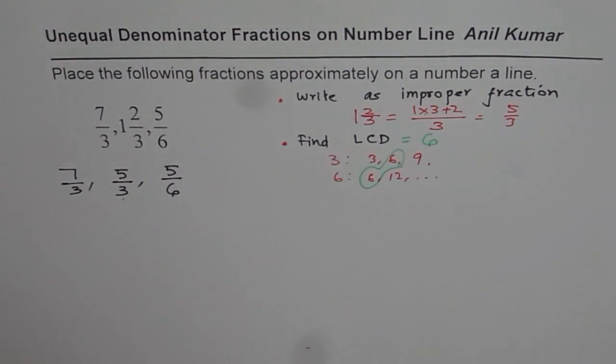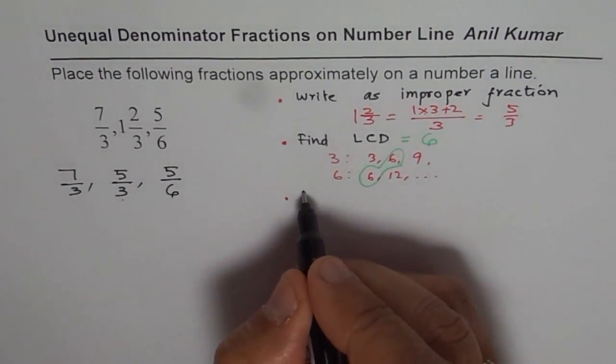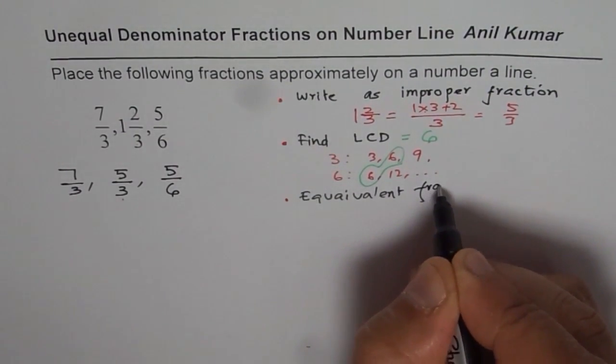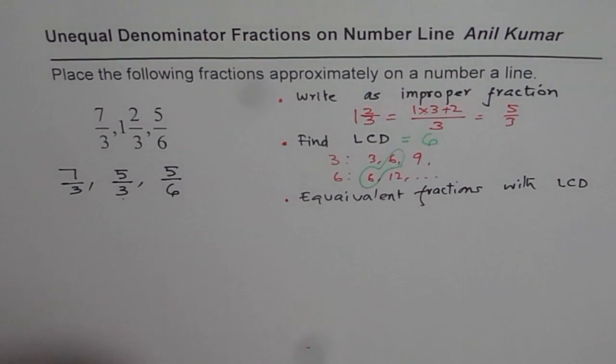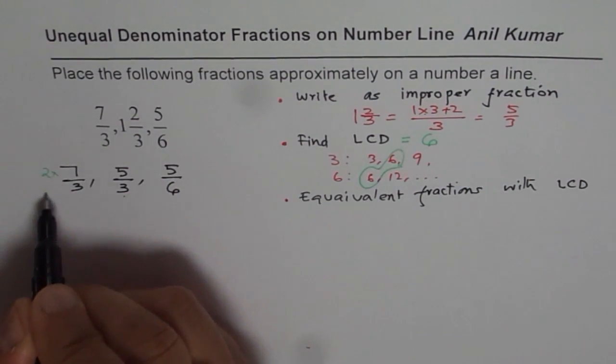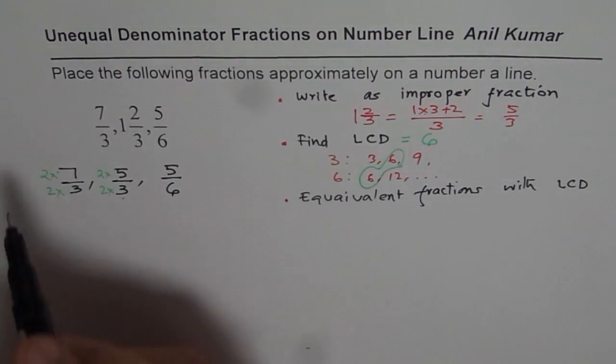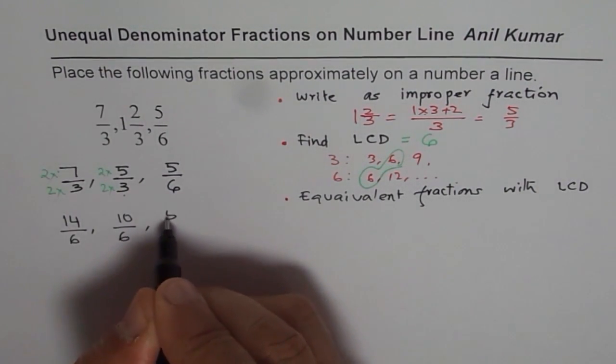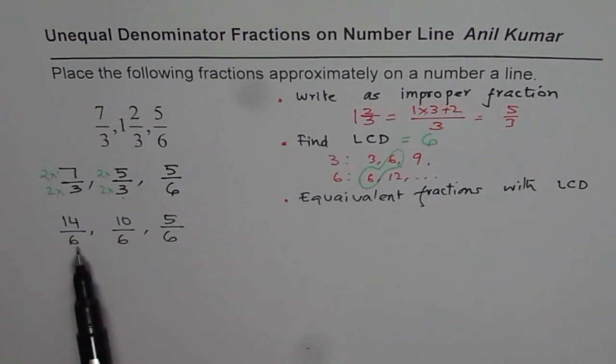How do you write them with lowest common denominator? Now is write equivalent fractions with lowest common denominator. In our case, it is 6. That means we have to make all of them 6 denominator. So multiply this by 2, both numerator and denominator. This also by 2. Here we already have 6. 2 times 7 is 14, so we get 14 over 6. 2 times 5 is 10, 10 over 6. And then we have 5 over 6.